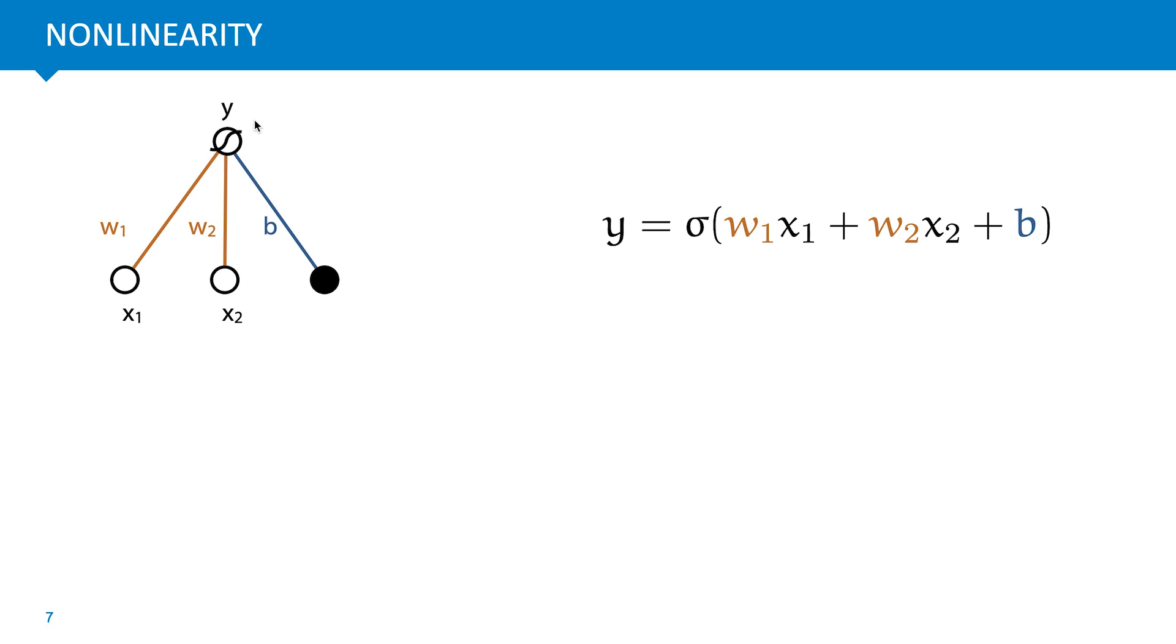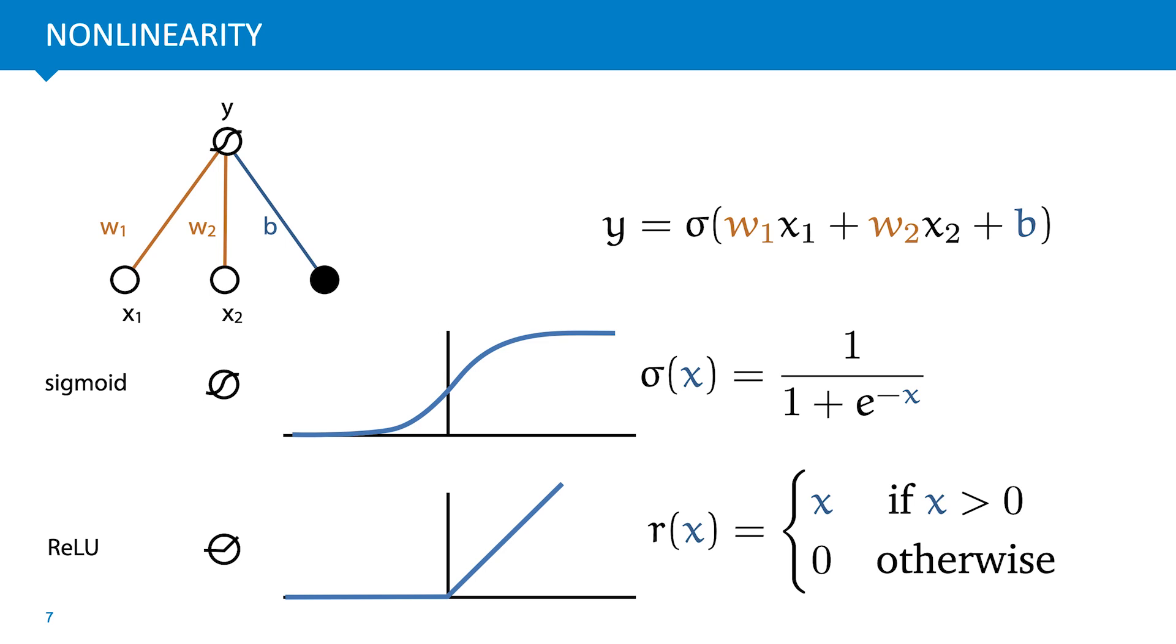The simplest solution is to apply a non-linear function to each perceptron called the activation function. This is a scalar function, a function from one number to another number, which we apply to the output of a perceptron after all the weighted inputs have been combined. One popular option, especially in the early days, is the logistic sigmoid, or simply the sigmoid. The sigmoid takes the range of numbers from positive to negative infinity and squishes them down to the interval between zero and one. Another more recent non-linearity is the linear rectifier, or ReLU non-linearity. This function just sets every negative input to zero and keeps everything else the same. Not using an activation function is also called using a linear activation.